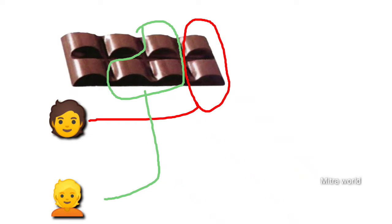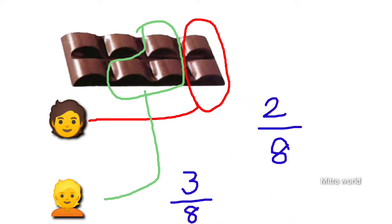But we can say mathematically: we can say 2 parts out of 8 parts. How will you express 2 out of 8 parts mathematically? 2 by 8, isn't it? So 2 out of 8 parts, we can say 2 by 8. So 3 out of 8 parts, we can say 3 by 8.